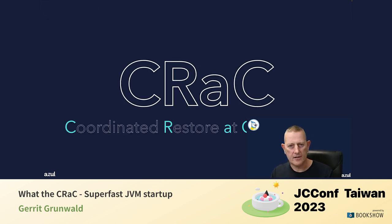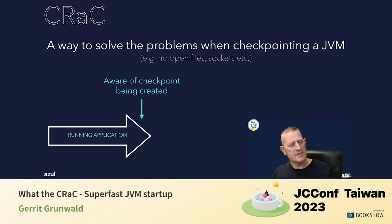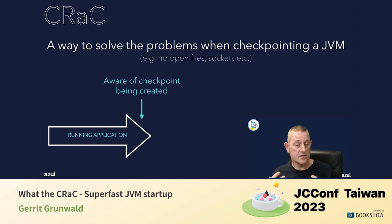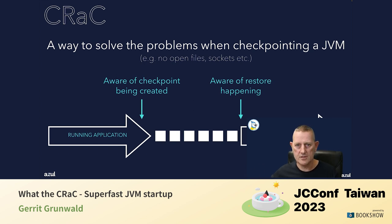That leads to CRaC — Coordinated Restore at Checkpoint. The idea is to coordinate exactly the moment of checkpoint creation and restoration. CRaC tries to let your application know that a checkpoint is about to happen, gives you as a developer the ability to do something before the checkpoint, then the checkpoint happens, and when you restore it, before the application fully starts up, it gives you the opportunity to do something — for example, restore the database connection — before your application resumes running.